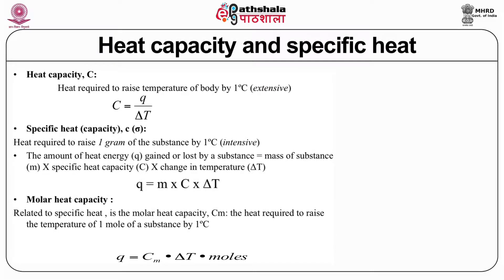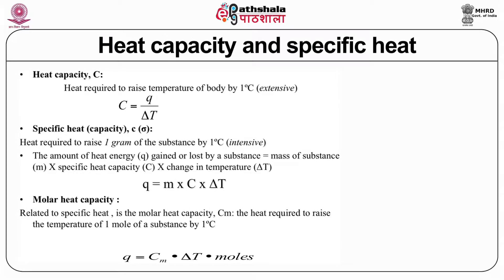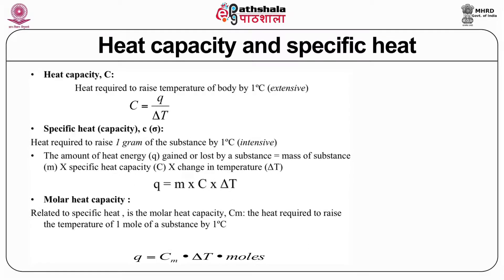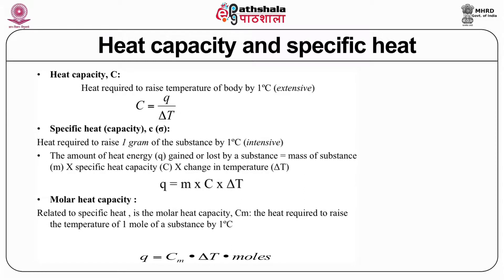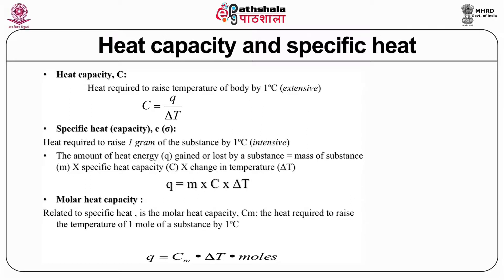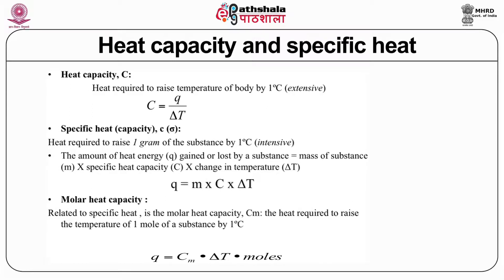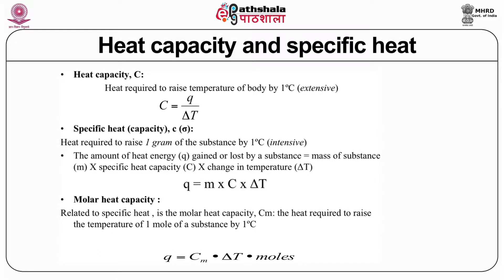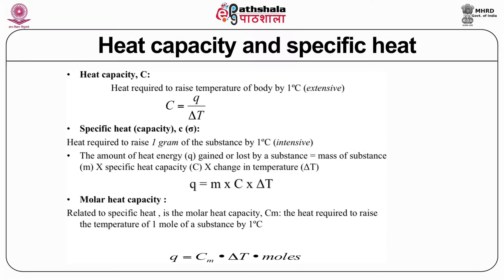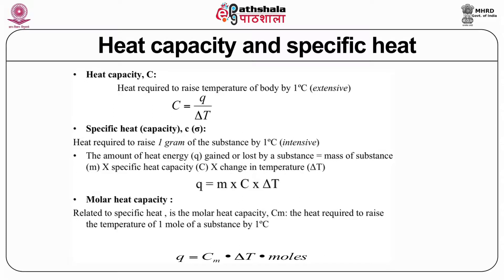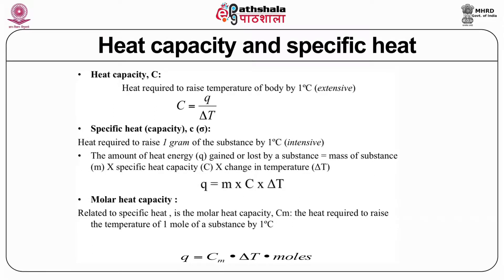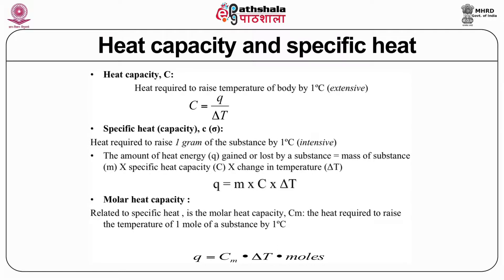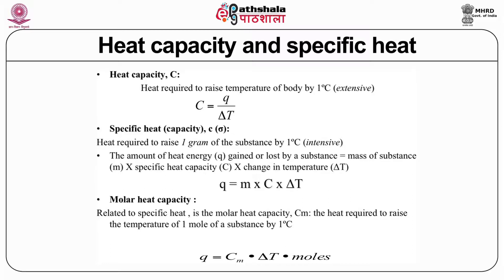Heat capacity and specific heat are two terms that continuously appear in thermodynamics. Heat capacity is the heat required to raise the temperature of a body by 1 degree centigrade — it is an extensive property, given by C equals Q divided by delta T. Specific heat, represented by sigma, is the heat required to raise 1 gram of a substance by 1 degree centigrade, making it an intensive property. The amount of heat energy gained or lost is equal to mass times C times delta T.